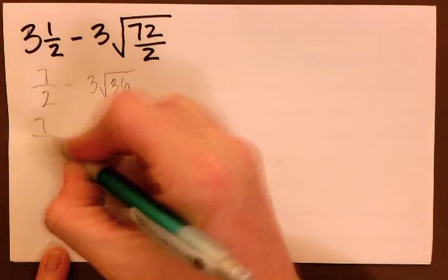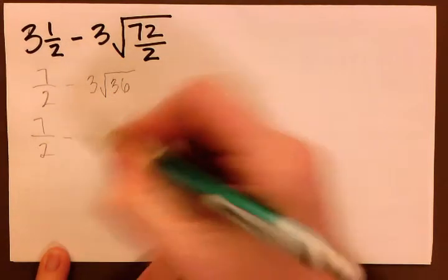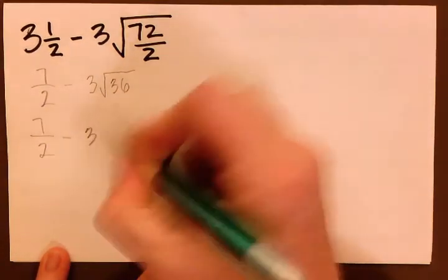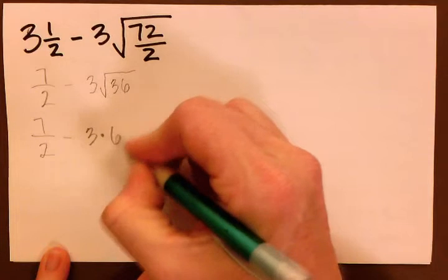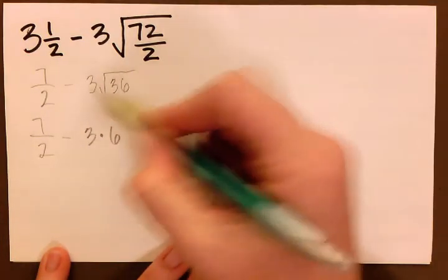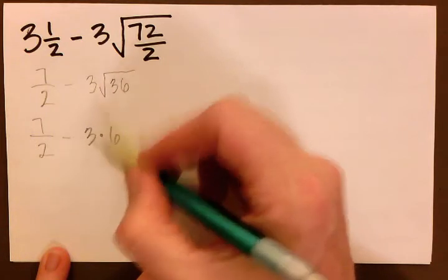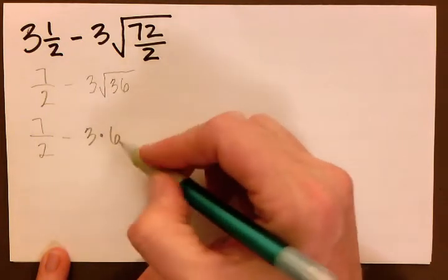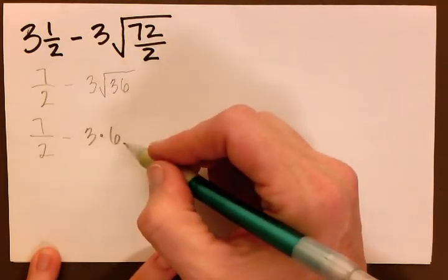7 halves is going to stay the same, minus, still have 3, the square root of 36 is 6. Now remember that whenever we have a number outside of the square root that means we're multiplying. So we have 3 still and the square root of 36 is 6. So we multiply those two.